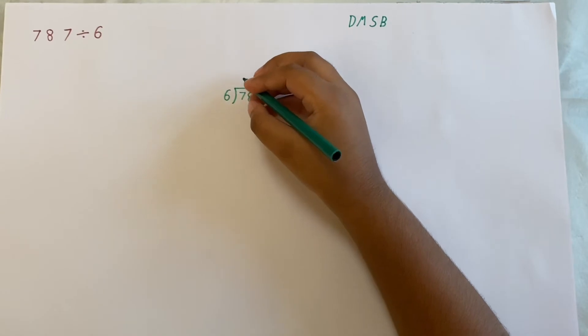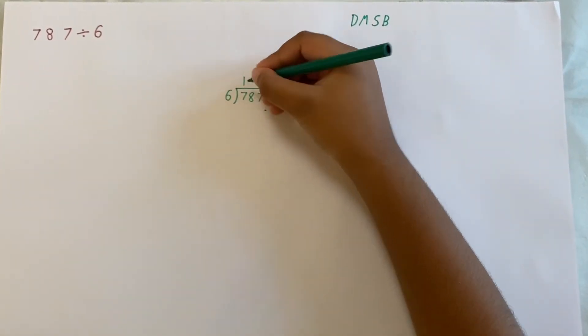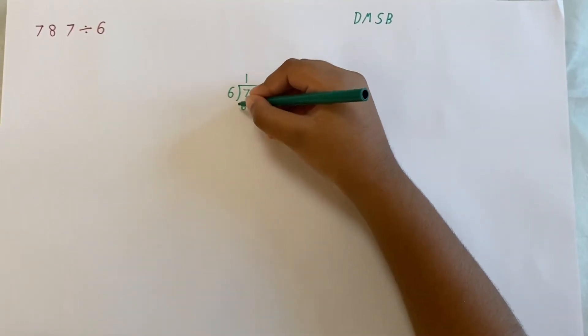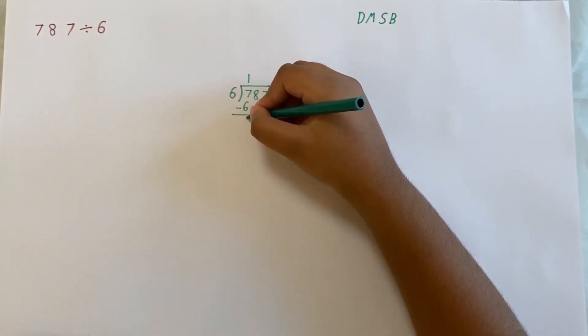What I mean by here: 6 times 1 equals 6. 7 subtract 6 equals 1.